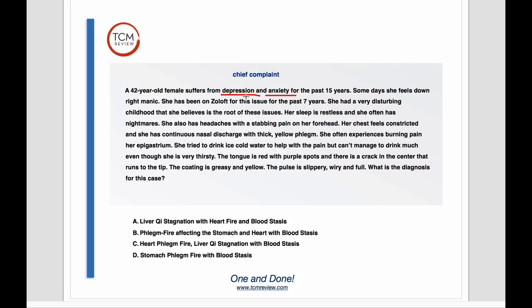With depression and anxiety, it doesn't really tell you much. Depression — even though the default tends to be liver qi stagnation for whatever reason — don't forget phlegm misting or spleen qi sinking. So many other patterns can cause depression. It's the same with anxiety: it could be from the heart, it can be from the kidneys, it could be due to excess, it could be due to deficiency. So we don't want to jump to a conclusion when a symptom can be caused by many, many different patterns.